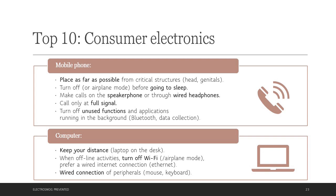From the consumer electronics we used most, there are mobile phones at the first place. We can place mobile phones as far as possible from critical structures, from the head or genitals. We can also turn phone off or have it on Airplane mode before going to sleep. It is good to make phone calls on the speaker phone or at least through wired headphones. It also helps if we call only at full signal. The less signal, the more power mobile phone needs to connect with base tower station, which increases our exposure. We can also turn off unused functions and applications running in the background.